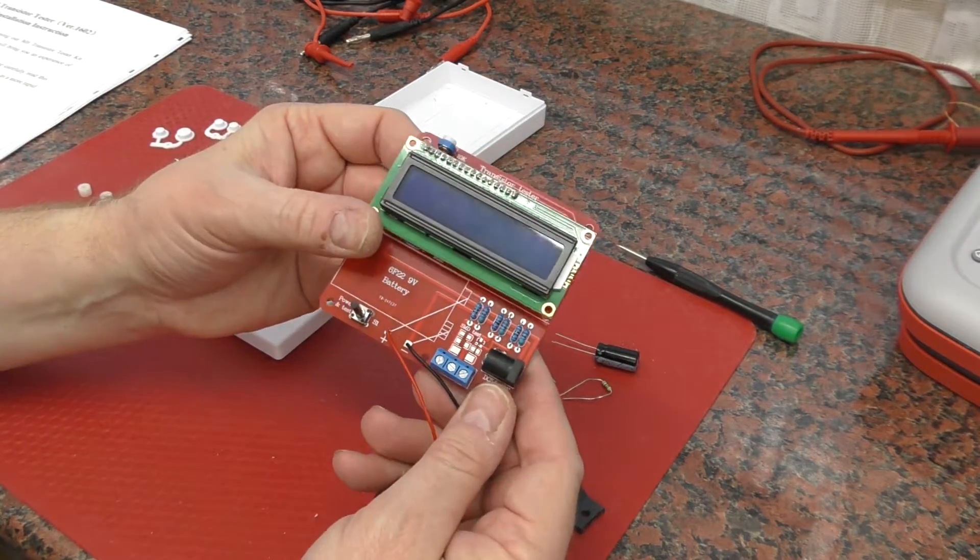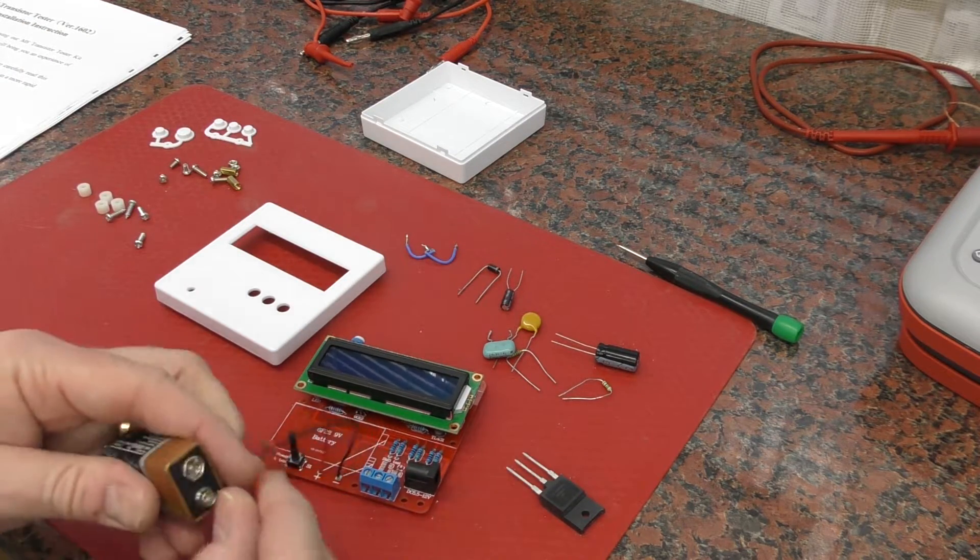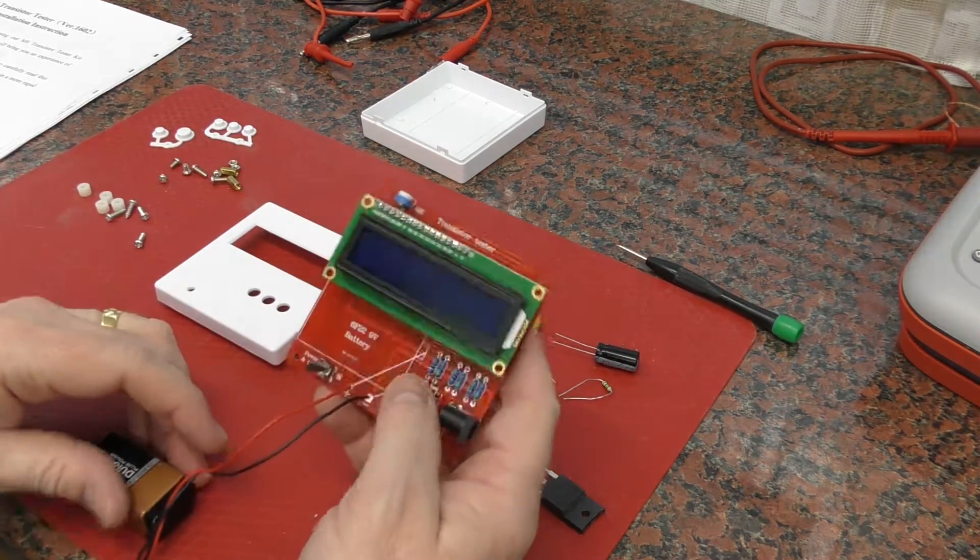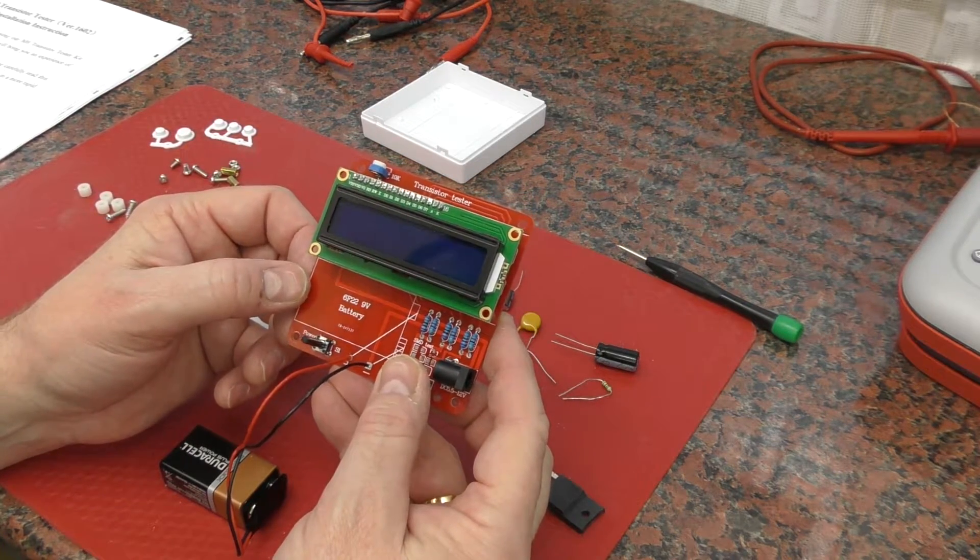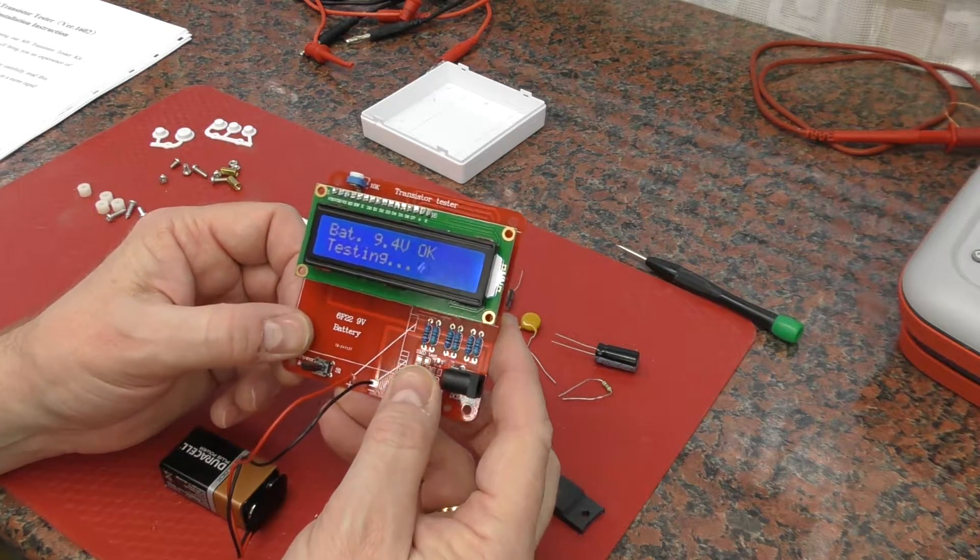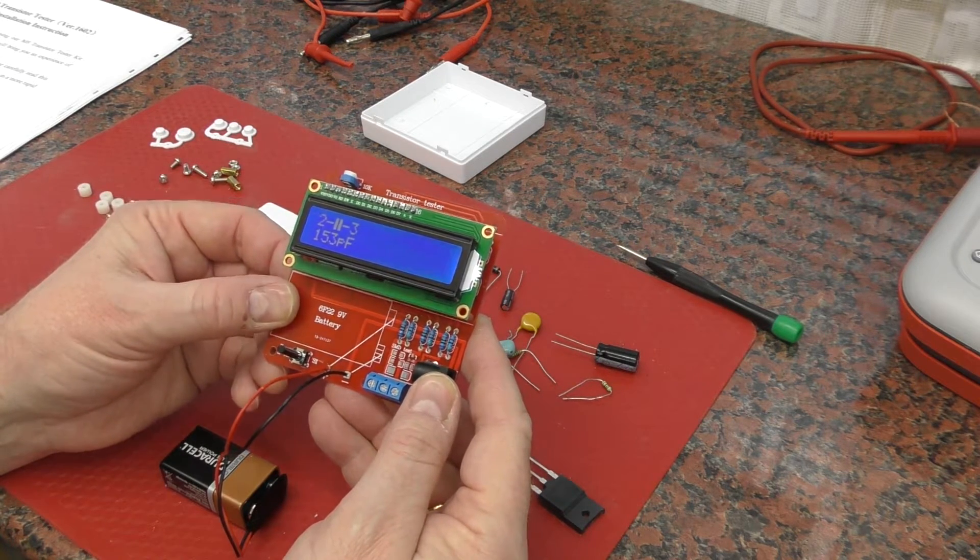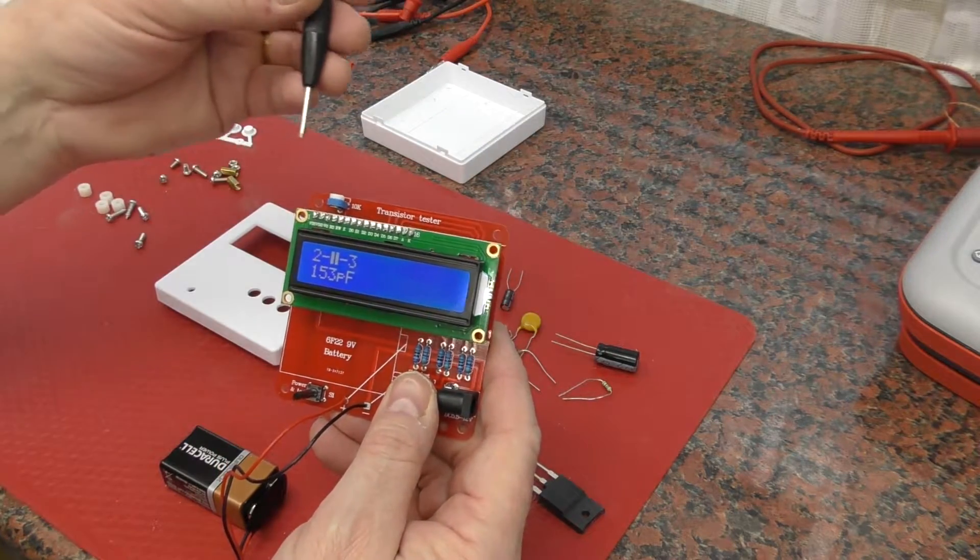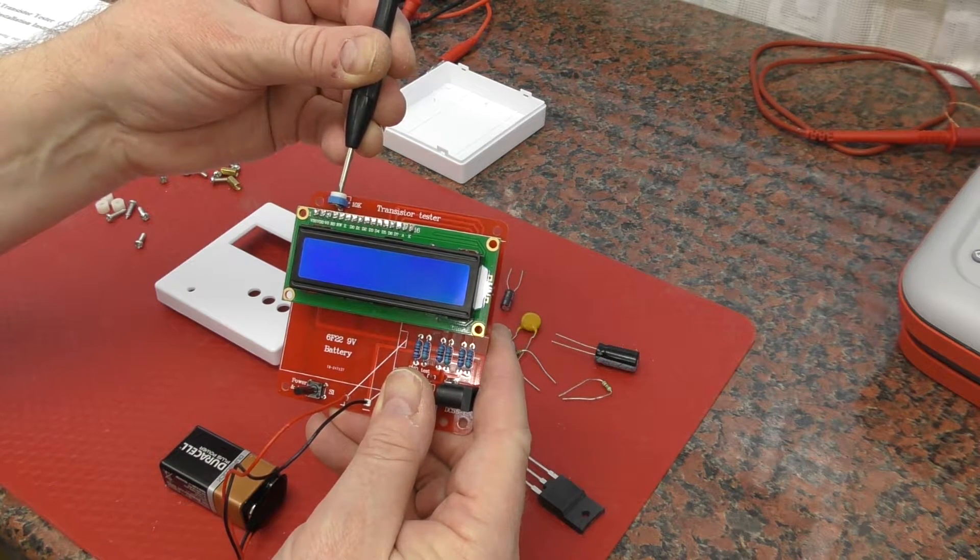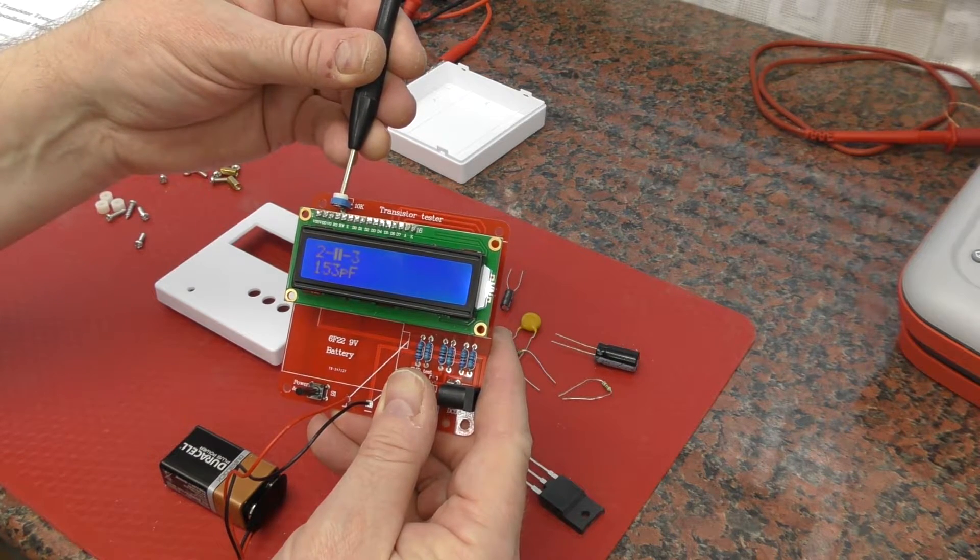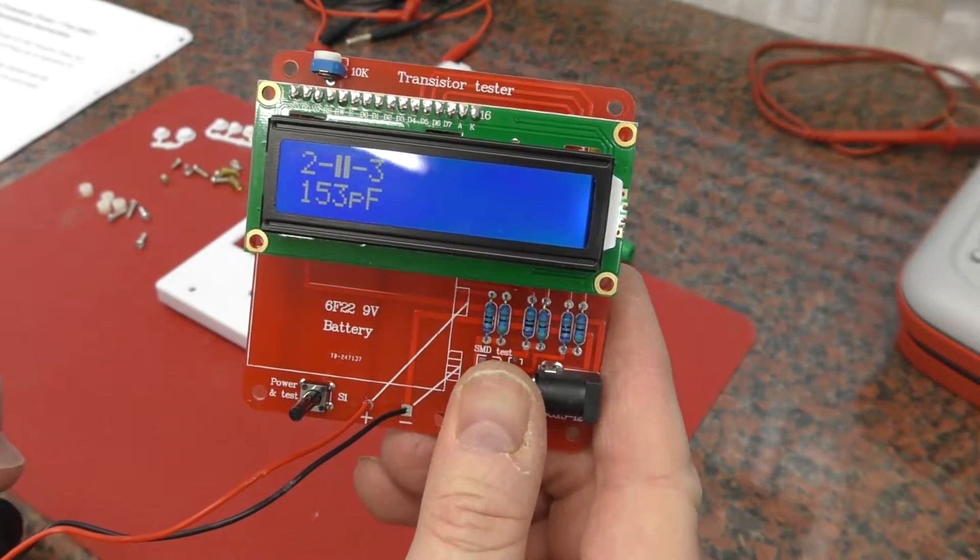Once the display is connected like that, you're ready to power it up. If you just connect your 9 volt battery, it will do absolutely nothing, but you've got to press the reset button - well, power and test is what they call it. You'll probably find like I did it will power up and you'll just have a blank display, nothing will be there. If you read the instructions, you need to actually just tweak the potentiometer until the display appears. That's what I had - just the backlight. Just tweak it until you get the display.